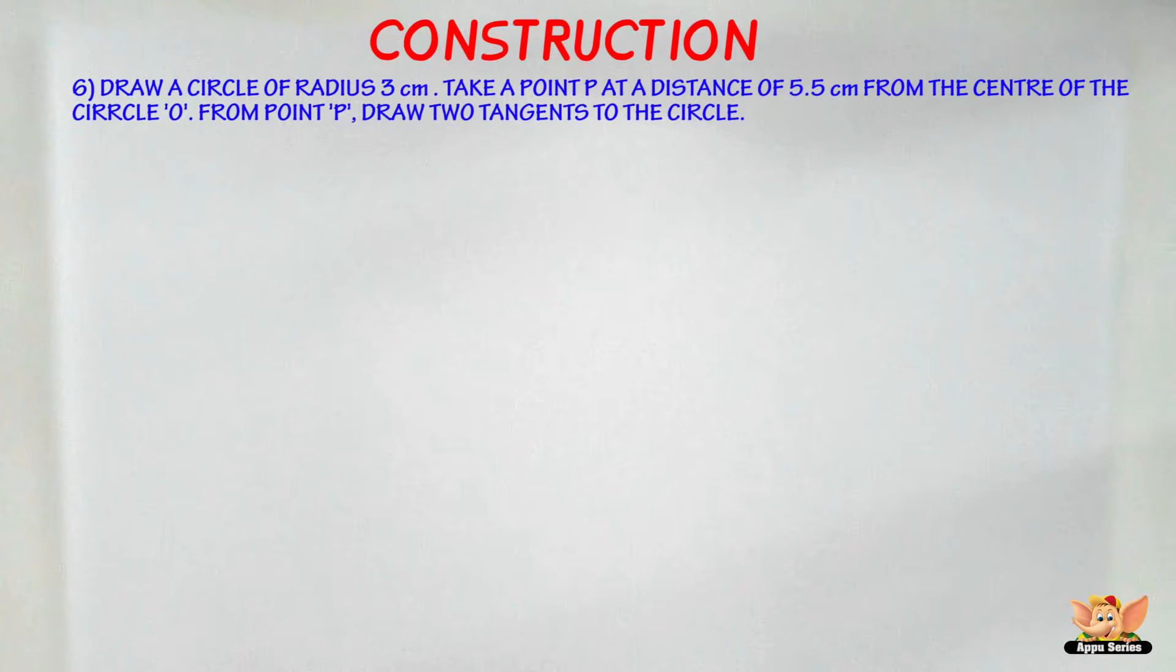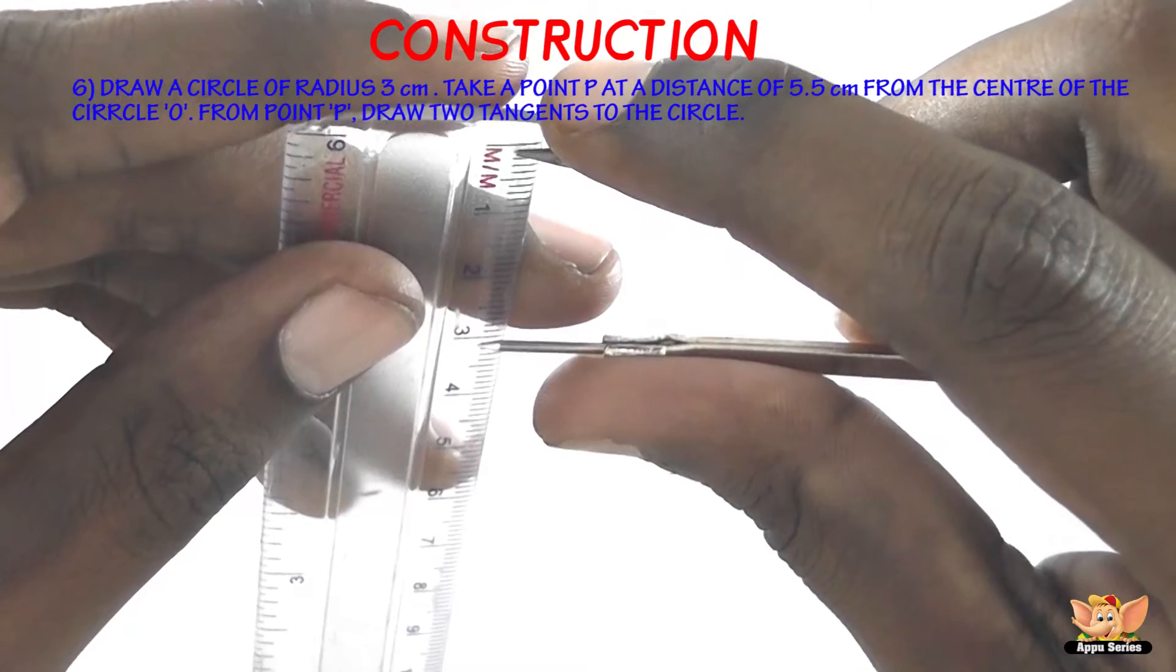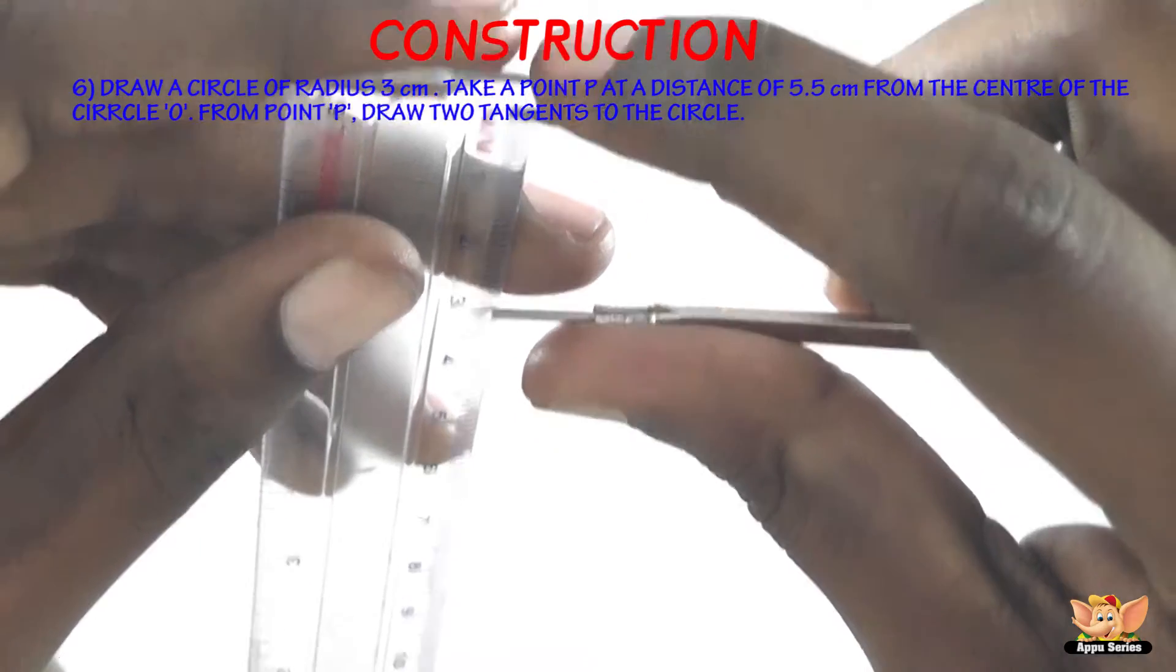Now the point P is the point that we take at a distance of 5.5 cm. So the first step is to draw a circle of radius 3 cm. So now let us measure 3 cm on the compass. Let's measure 3 and here we've got 3.